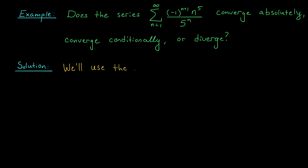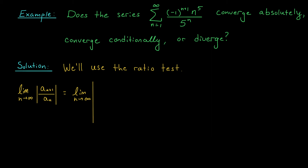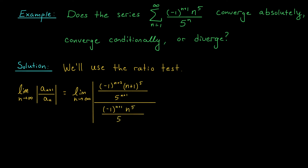To use the ratio test, we compute the limit as n goes to infinity of |a_{n+1} / a_n|. In this case, we have the limit as n→∞ of the absolute value of [(-1)^{n+2} · (n+1)^5 / 5^{n+1}] divided by [(-1)^{n+1} · n^5 / 5^n]. We start by getting rid of those (-1)^n terms since we're taking absolute value — those disappear. Then I flip the bottom fraction up and change it to multiplication.